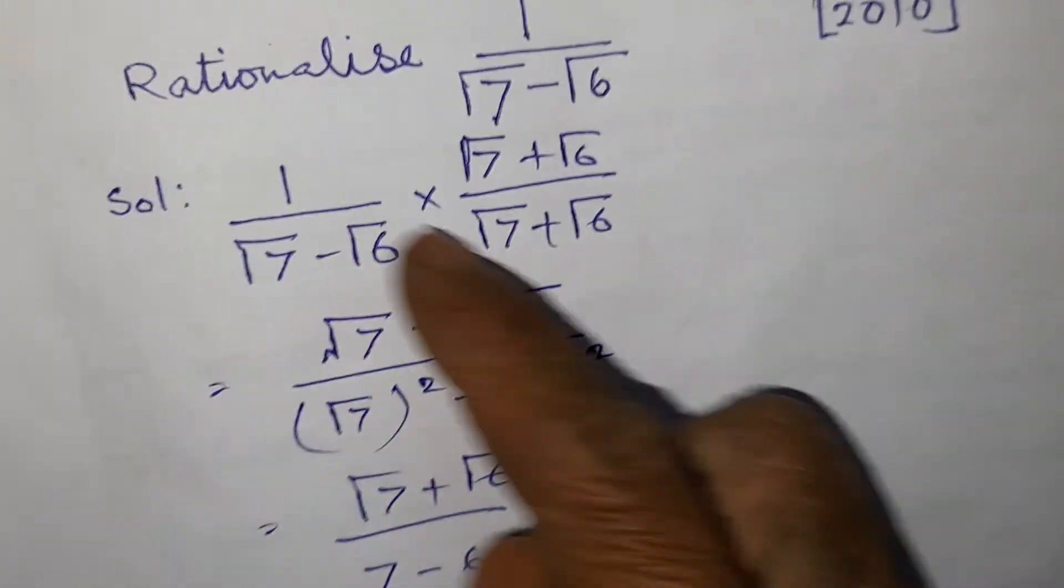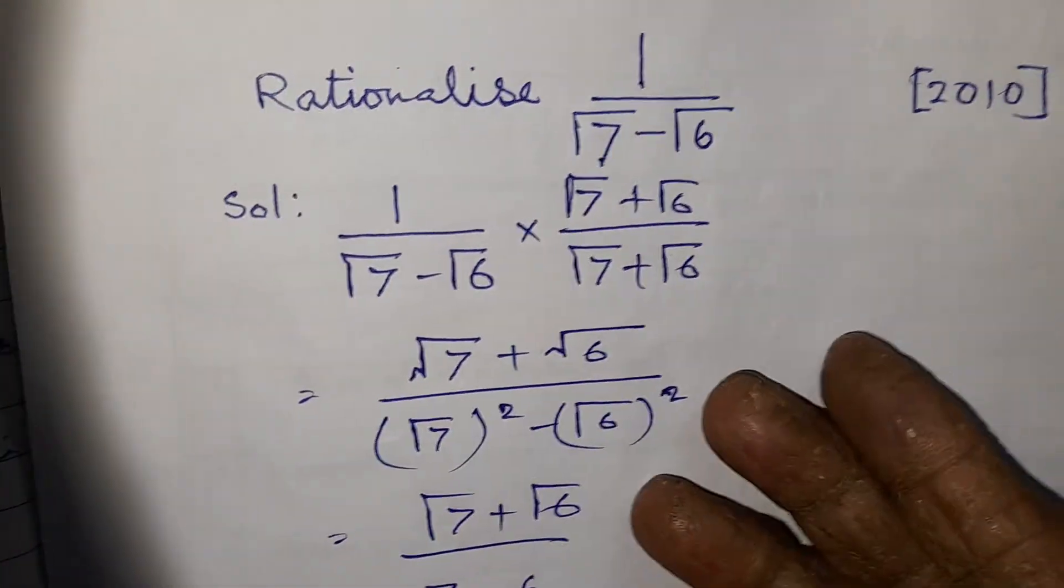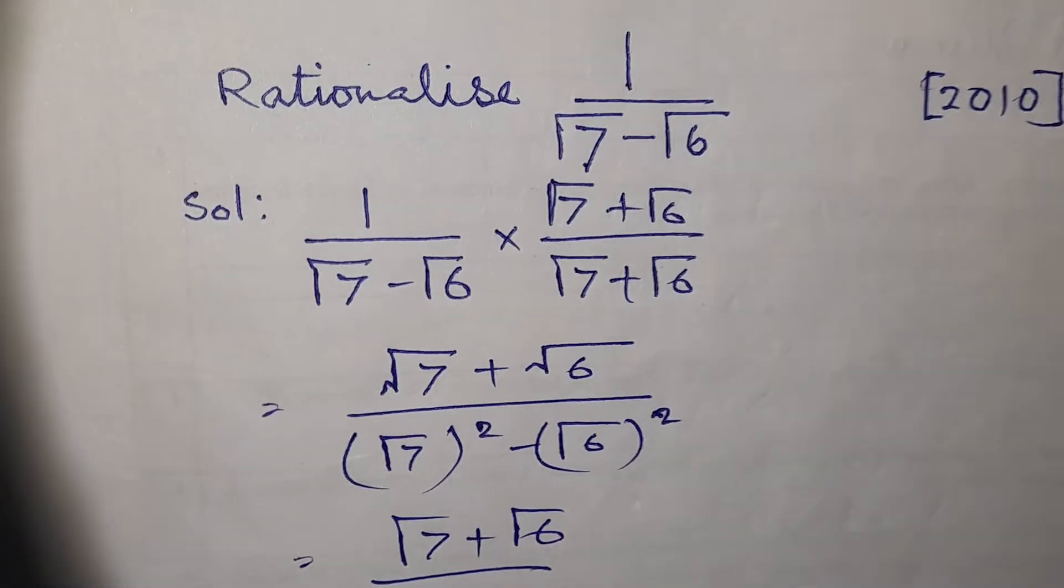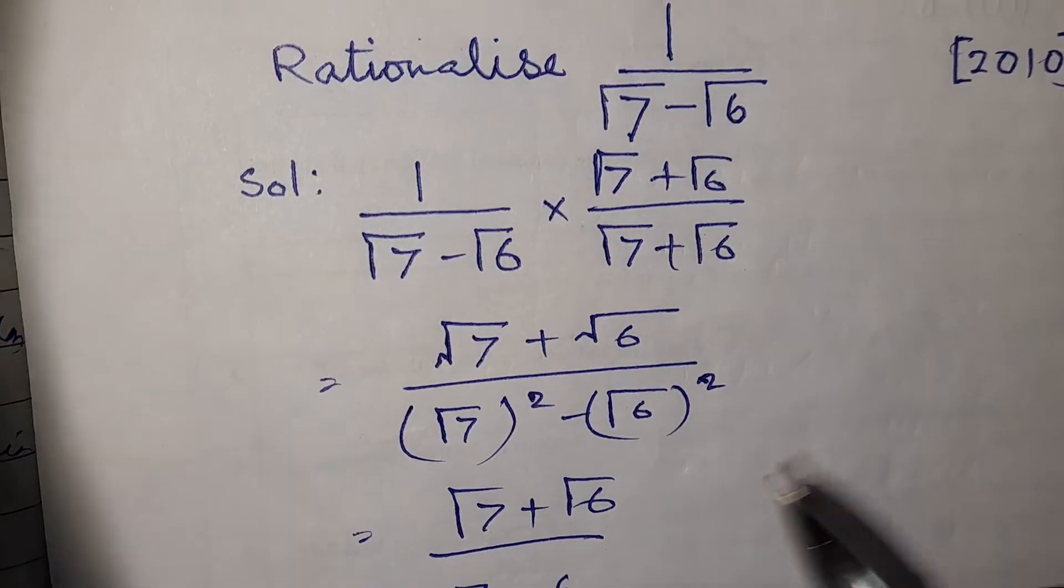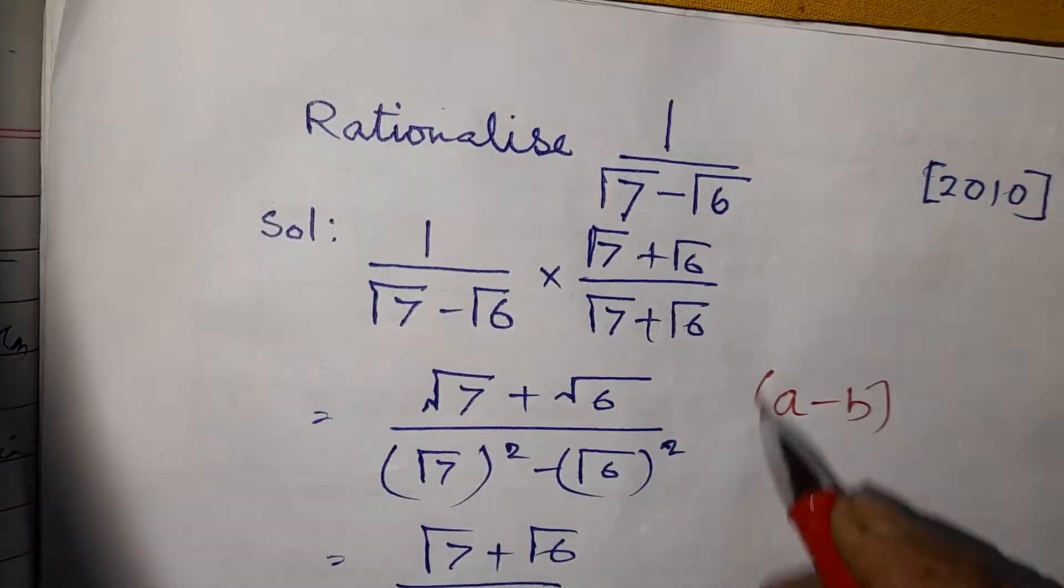So root 7 plus root 6 into 1 will be automatically root 7 plus root 6. Very easy. And you know one formula is applied here.